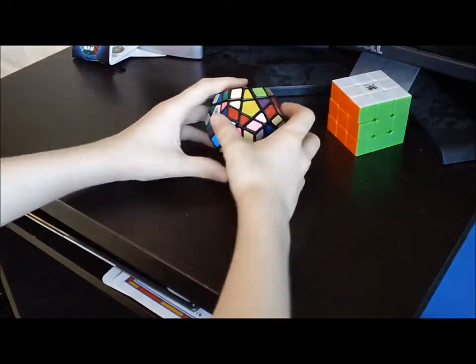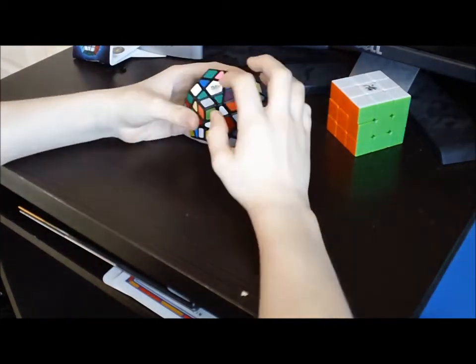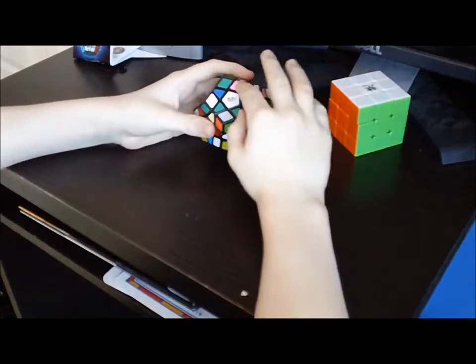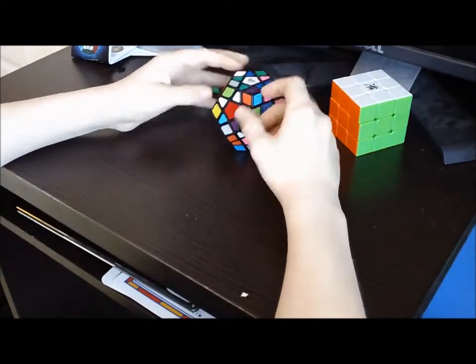Okay, now that we have scrambled our Megaminx, we're going to solve the white star. Because that's what the Megaminx has. It has a star and then corners. So, first of all, before we get into the white star, let's identify the edges.